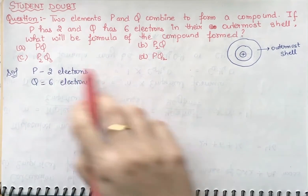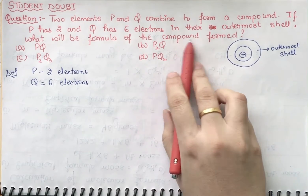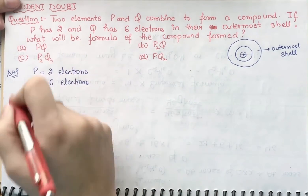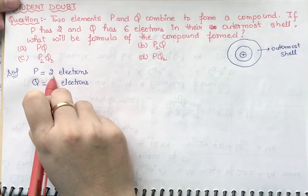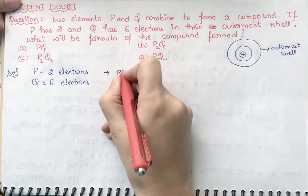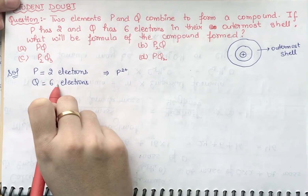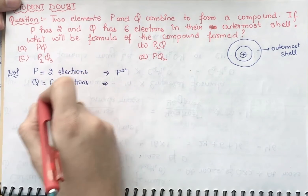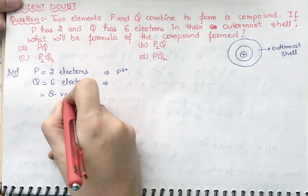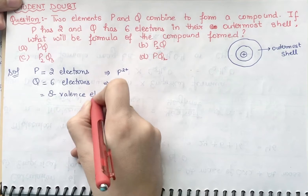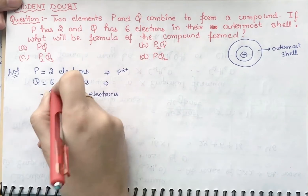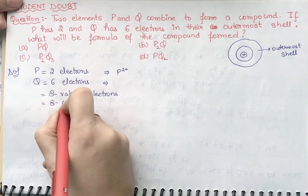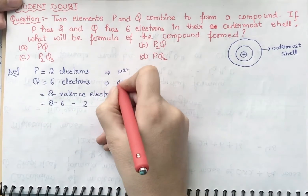To find the formula of the compound, we first need to know the valency of these elements. In the case of P, we are having electrons less than four, so the valency of P will be P²⁺. Q is having six electrons, which is more than four, so to find the valency of Q we subtract from eight: eight minus six equals two, meaning Q has a valency of two negative.